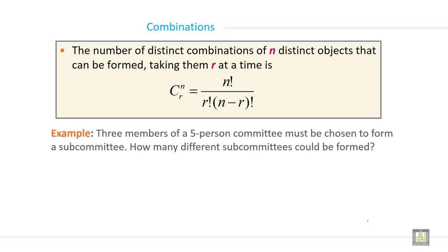The number of distinct combinations of n distinct objects that can be formed taking them r at a time is Cnr equals n factorial divided by r factorial into n minus r factorial.